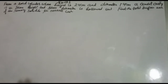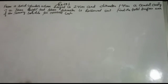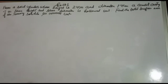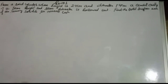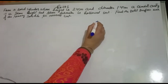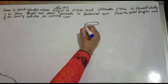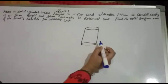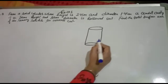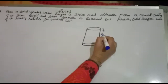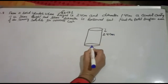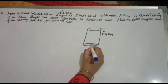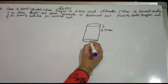Welcome to your favorite channel Math Helper. CX 13.1, question number 8: From a solid cylinder whose height is 2.4 cm and diameter 1.4 cm — suppose this is a solid cylinder — its height is 2.4 cm and diameter is 1.4 cm. Since diameter is 1.4, radius will be 1.4 divided by 2, which gives 0.7 cm.